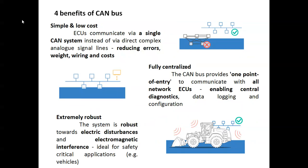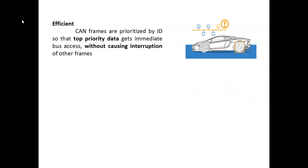The four benefits of CAN bus are: first, it is simple and low cost — it reduces wiring errors, weight, and wiring cost. Second, it is fully centralized — CAN provides one point of entry for the whole network, enabling central diagnostics. Third, it is extremely robust against electronic disturbances and electromagnetic interference, making it ideal for safety-critical applications. Fourth, it is very efficient — CAN frames are prioritized by ID, so the lowest ID value gets the highest priority and immediate bus access without interrupting other frames.